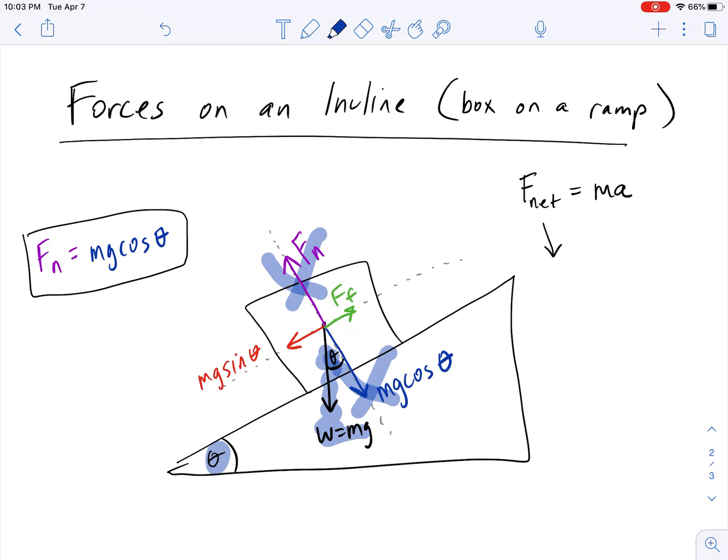So the net force is what you're left with. So if the box is going down the ramp, that would imply that mg sine theta is greater than your friction force. So your net force equation would be mg sine theta minus the friction force equals mass times acceleration.